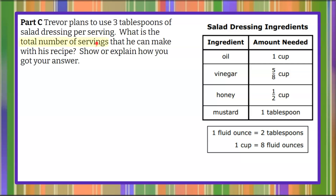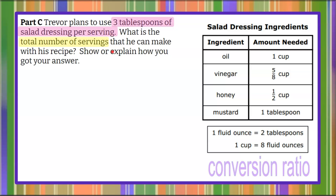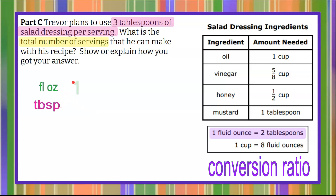Welcome back. Trevor wants to know the total number of servings from all of his salad dressing when he needs three tablespoons per serving. We're going to come back to our conversion ratios and convert our fluid ounces to tablespoons: one fluid ounce is equivalent to two tablespoons.